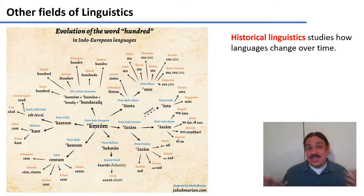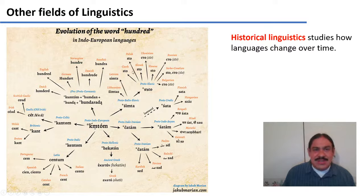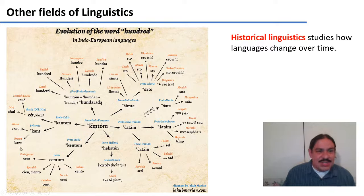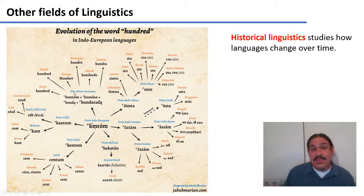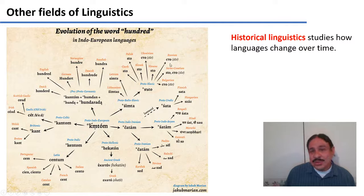Sociolinguistics also studies how languages change. All of these languages — English, Dutch, Ukrainian, Persian, Ancient Greek, Spanish — have words for 100 which ultimately come from an ancient language called Proto-Indo-European, where the word must have sounded something like 'kumtum'. That word changed in different ways over about 4,000 years until it became 'cien' in Spanish, 'hundred' in English, and 'sto' in Russian. So we'll look at how these changes occur.